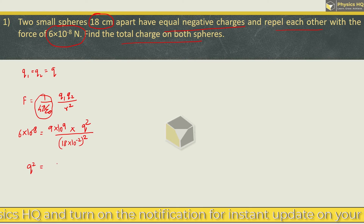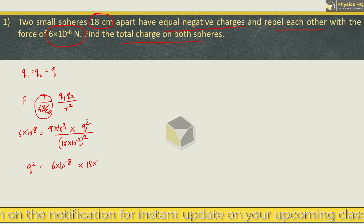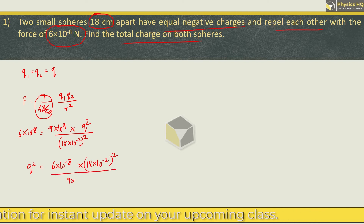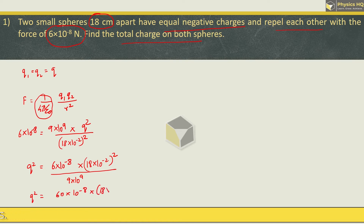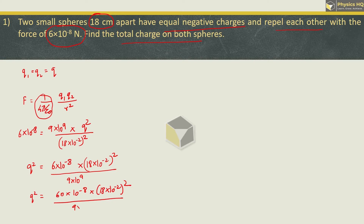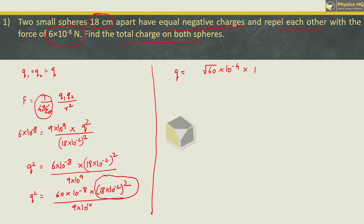When we rearrange this, Q² is equal to 6×10⁻⁸ into (18×10⁻²)² divided by 9×10⁹. Taking the square root: the root of 9 is 3 and the root of 10¹⁰ is 10⁵.